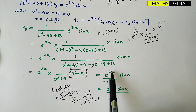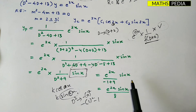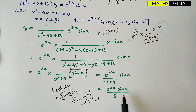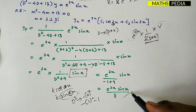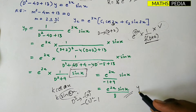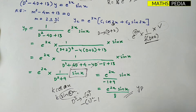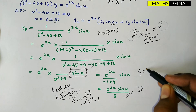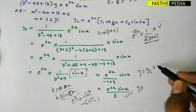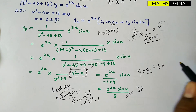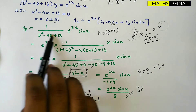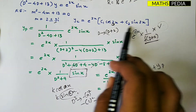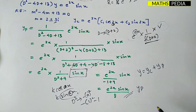Keep e^(ax) as it is. Then e^(2x) divided by (−1 + 9) gives 8. So you get e^(2x)·sine(x) / 8. This is the final yp. Now we add: y = yc + yp, combining the complementary function with yp to get the final answer.